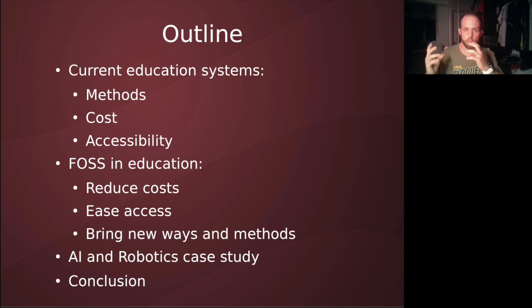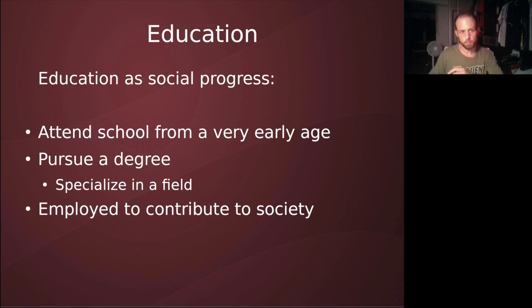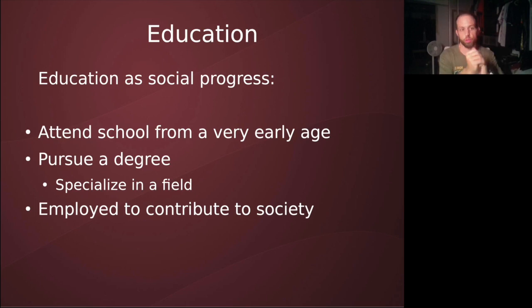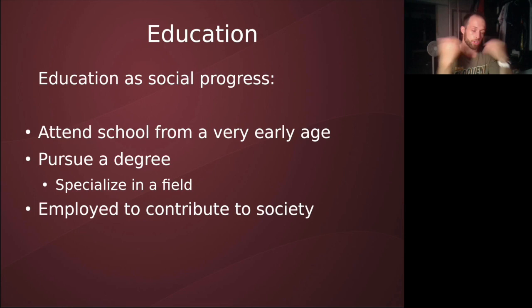Then we'll run into some conclusions about what we can do to improve education in the world. A very typical view of education is to see it as social progress. In a developed country, once I get to the age, I start attending school from a very early age. At a certain point I pursue a degree, and once I get that degree, I specialize in a certain field and get a job to contribute to society. That is the basic view of education in the developed world in a capitalist country.